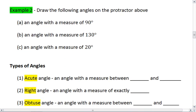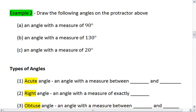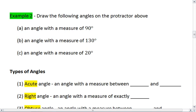For example 2, I want you to draw the following angles on the protractor that you have given above. An angle with a measure of 90 degrees, 130 degrees, and 20 degrees. Pause your video, try this, and then resume your video when you're ready to check your solution.